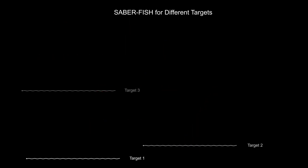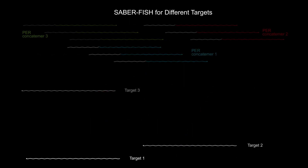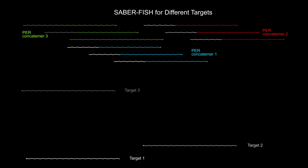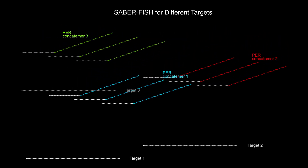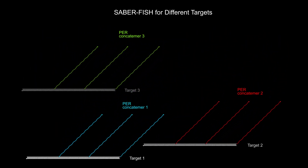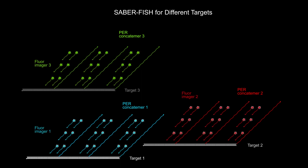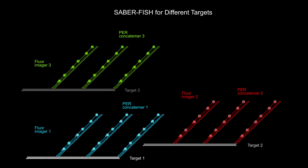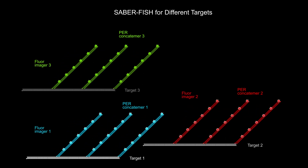Sabre-amplified FISH analysis can be used in a tunable fashion to visualize a combination of DNA and RNA targets inside the cell using fluorescent imagers that emit light at different wavelengths corresponding to different colors.